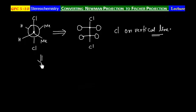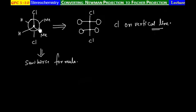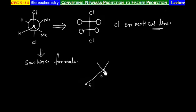First, we will convert this Newman projection formula into a sawhorse formula. If you see this Newman projection formula, this is the back carbon and this is the front carbon. On the back carbon we have a Y that is upward. On the front carbon we have a Y that is inverted.